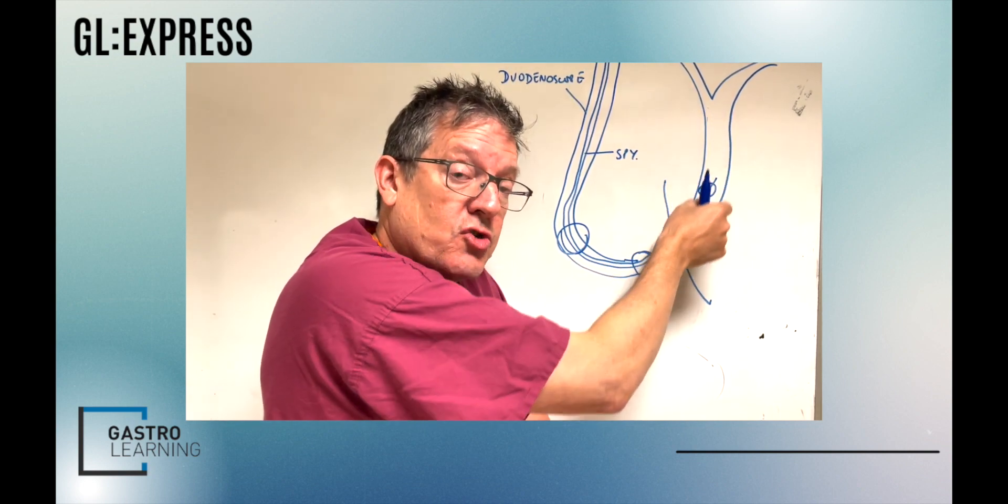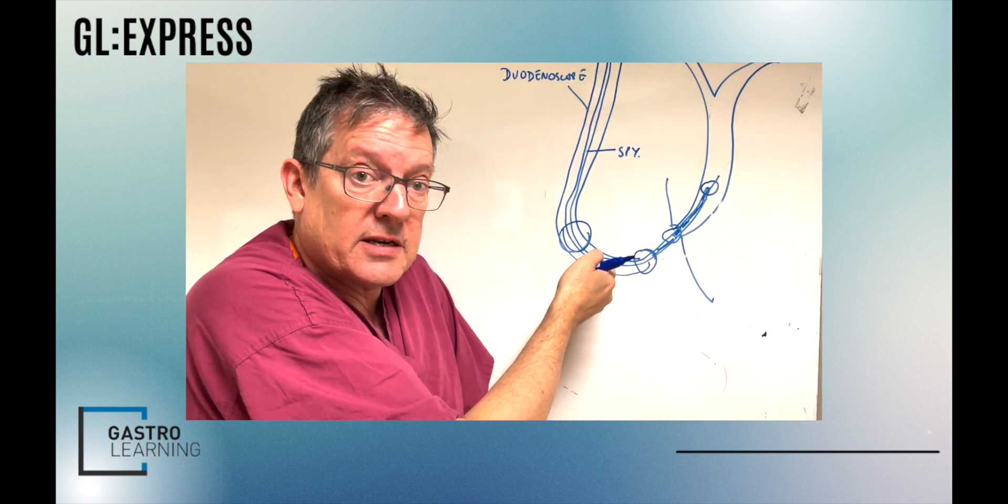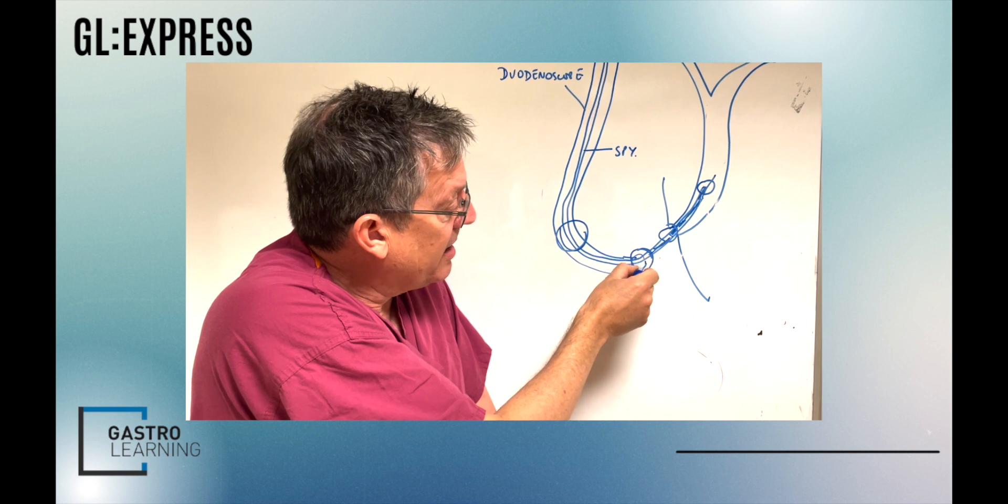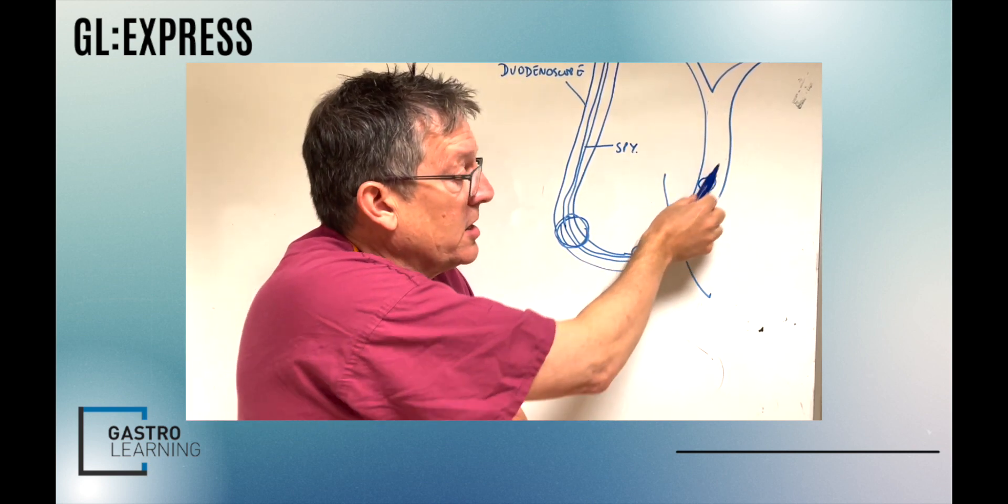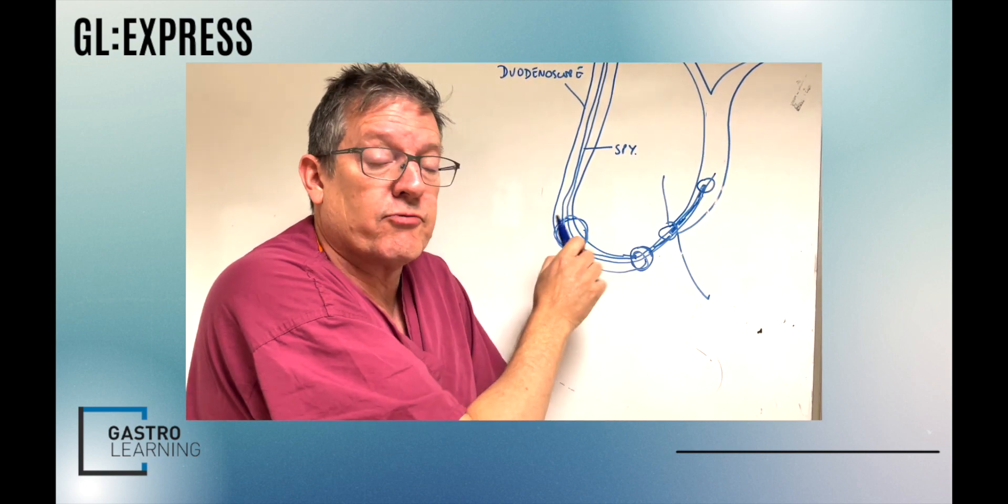And similarly, if one's getting stuck either at the bridge or at the duodenum scope bend, either advance the whole spy scope or withdraw it. That'll resolve the problem.